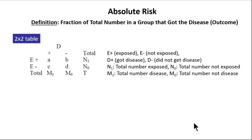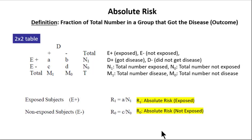Once entries are placed in the 2×2 table, a number of metrics analyzing the results can be calculated. One is the absolute risk, defined as the fraction of the total number of a particular group that got the disease or outcome. The absolute risk for the exposed group, denoted R1, equals A divided by the total number of exposed participants, n1 — this gives the fraction of the exposed group getting the disease. Likewise, the absolute risk for the non-exposed group, R0, is C divided by the total number of non-exposed participants, n0.